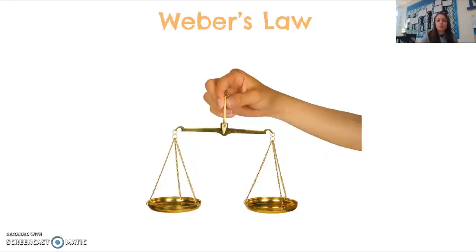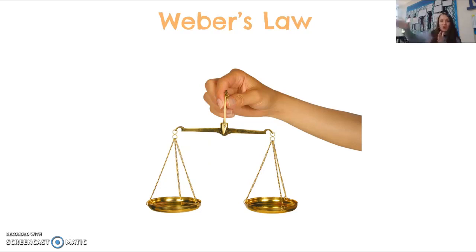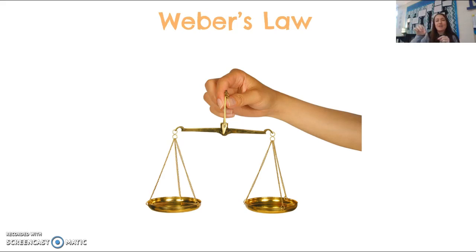Weber's law is simply: the greater the change, the more likely you'll notice it. With the volume example, going from 1 to 30 very fast is a greater change, so you'd notice it. Going up one notch at a time is a smaller change. Similarly, if you were holding a scale with a couple of pennies and dropped 50 pennies on it, you'd notice that — it's a greater change than adding one, two, three, four. The greater the change, the more likely you are to notice the change.